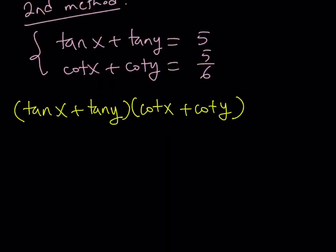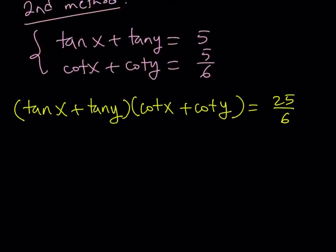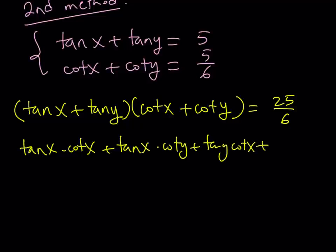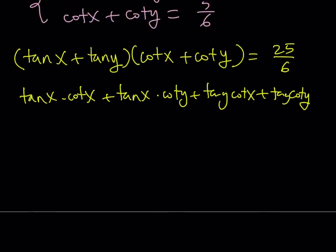Let's distribute it. (tan x + tan y)(cot x + cot y) = tan x·cot x + tan x·cot y + tan y·cot x + tan y·cot y. And it's equal to 25/6. This becomes 1 because they're reciprocals, and this becomes 1. So we get 1 + 1, which is 2.